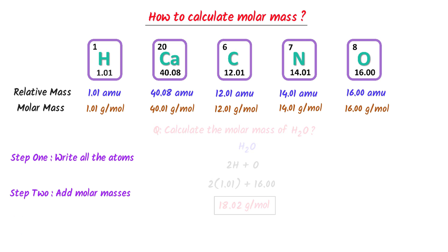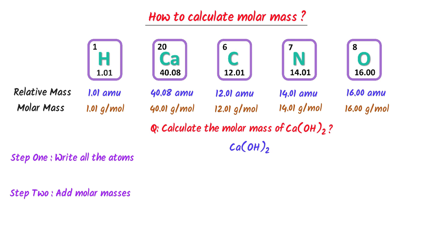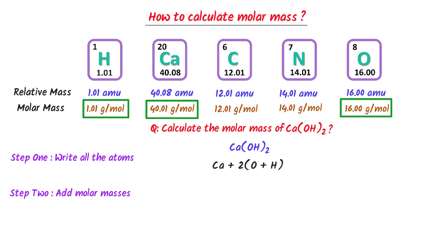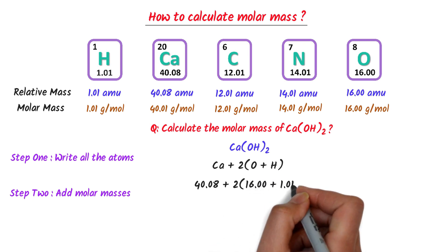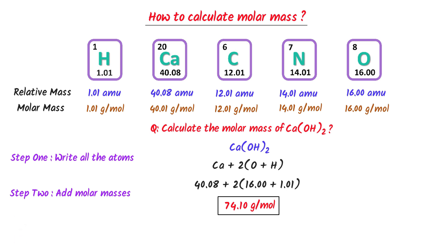Thirdly, let me teach you one hard question. Calculate the molar mass of calcium hydroxide. There is one atom of calcium. Remember that the subscript 2 means that there are two atoms of oxygen and two atoms of hydrogen present in calcium hydroxide. So I write calcium plus two times oxygen plus two times hydrogen. The molar mass of calcium is 40.08, that of oxygen is 16.00, and that of hydrogen is 1.01. I write 40.08 plus 2 times 16.00 plus 2 times 1.01. After calculation, I get 74.10. And lastly, I put the SI unit of molar mass which is gram per mole.